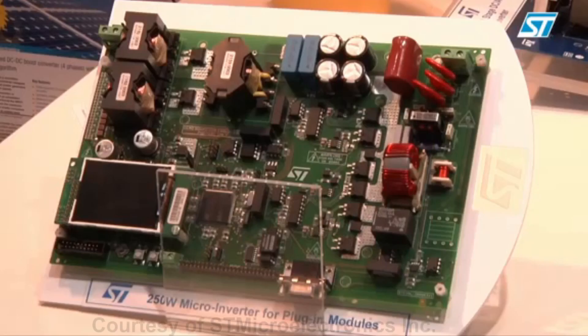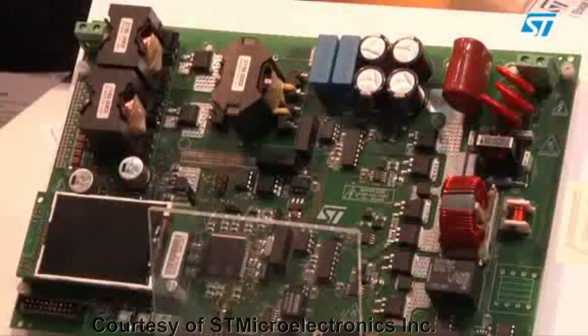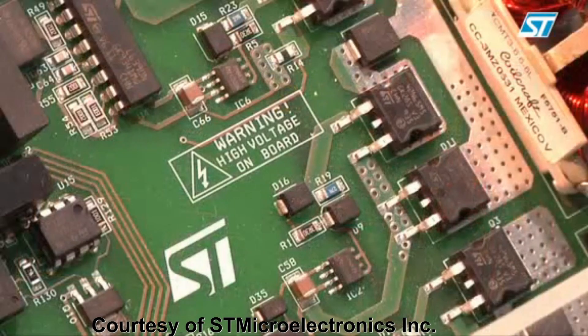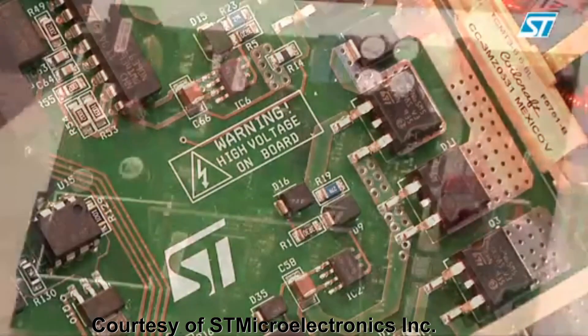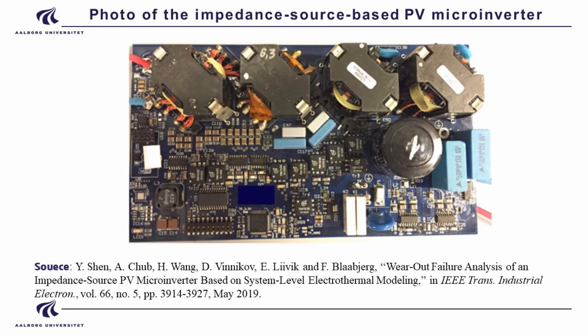Then it shows a microinverter from ST Microelectronics. It also has two stages: the DC-DC side is an interleaved isolated boost DC-DC converter, and a mixed-frequency DC-AC converter. The DC-AC converter uses a hybrid modulation technique.